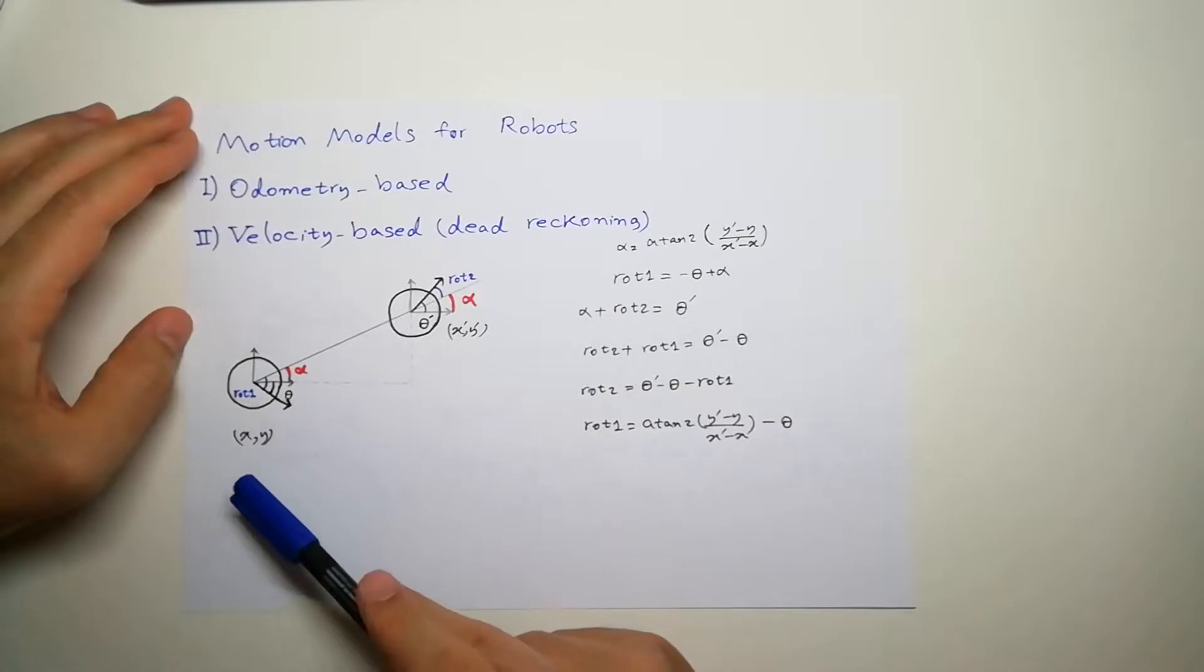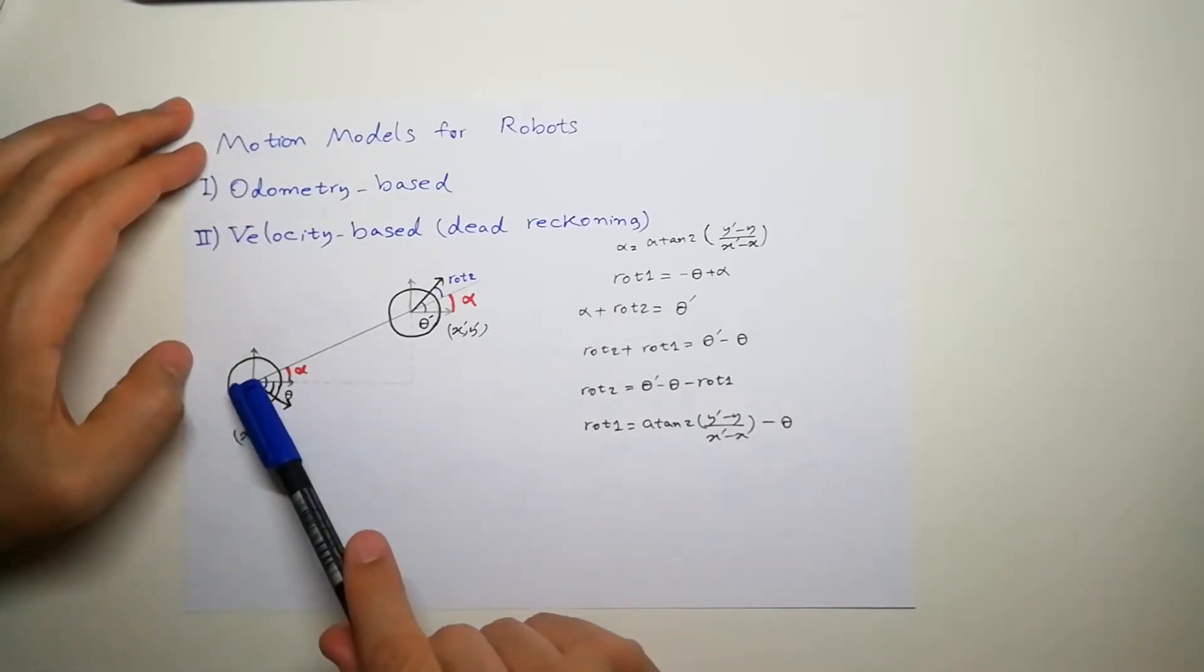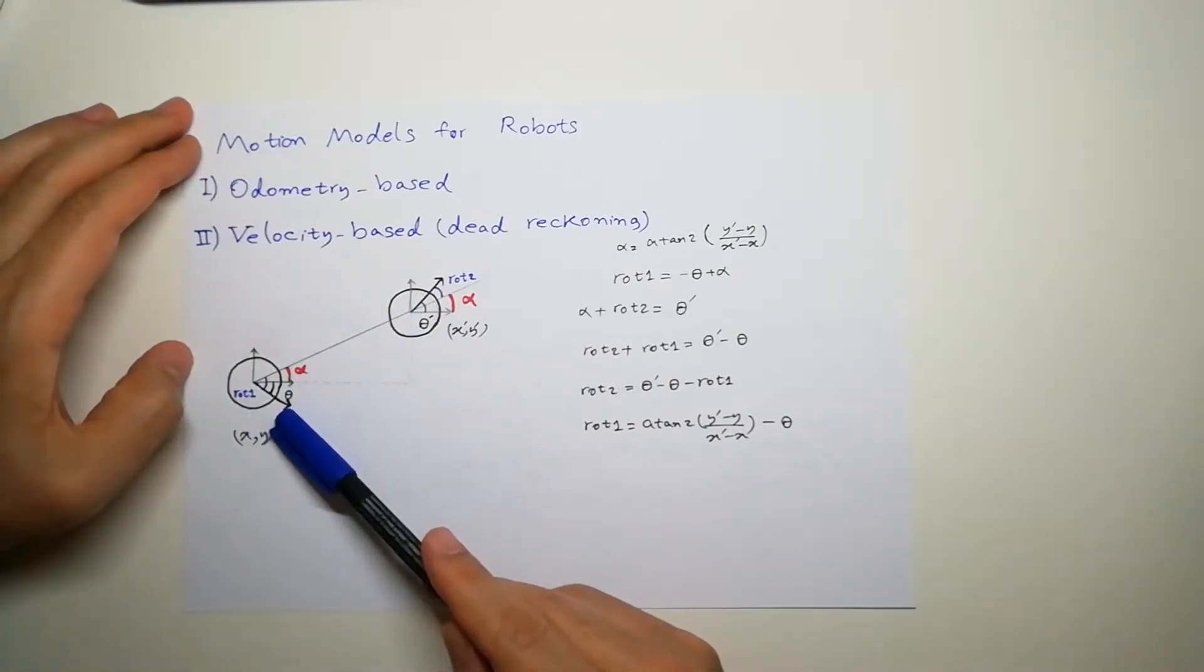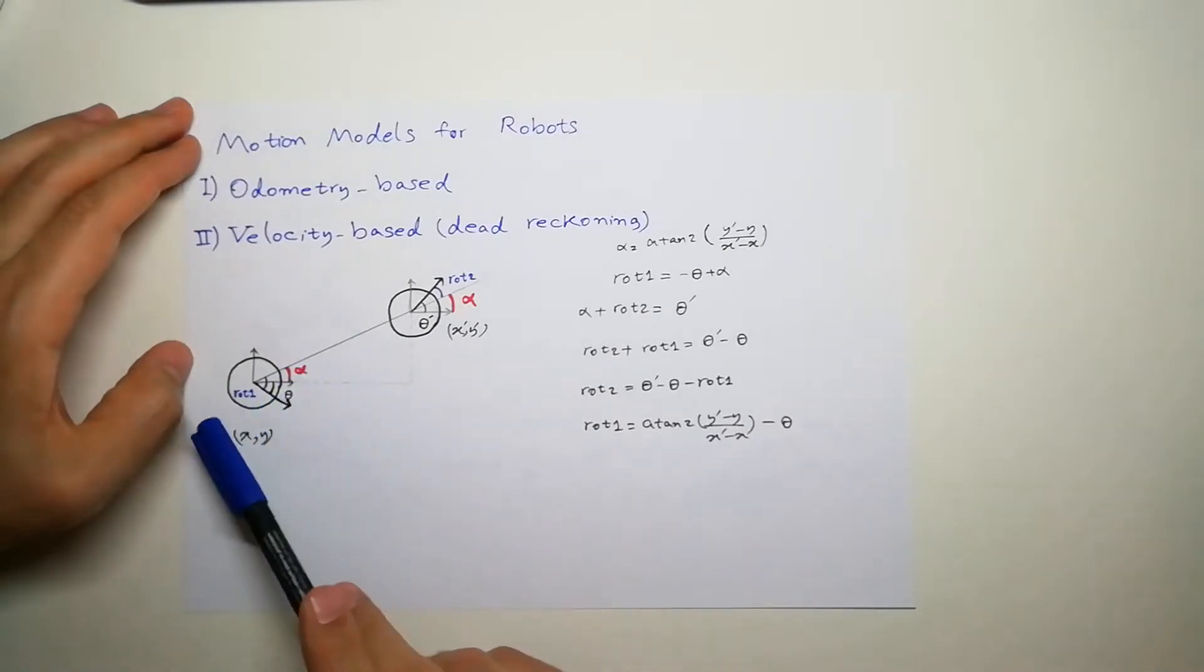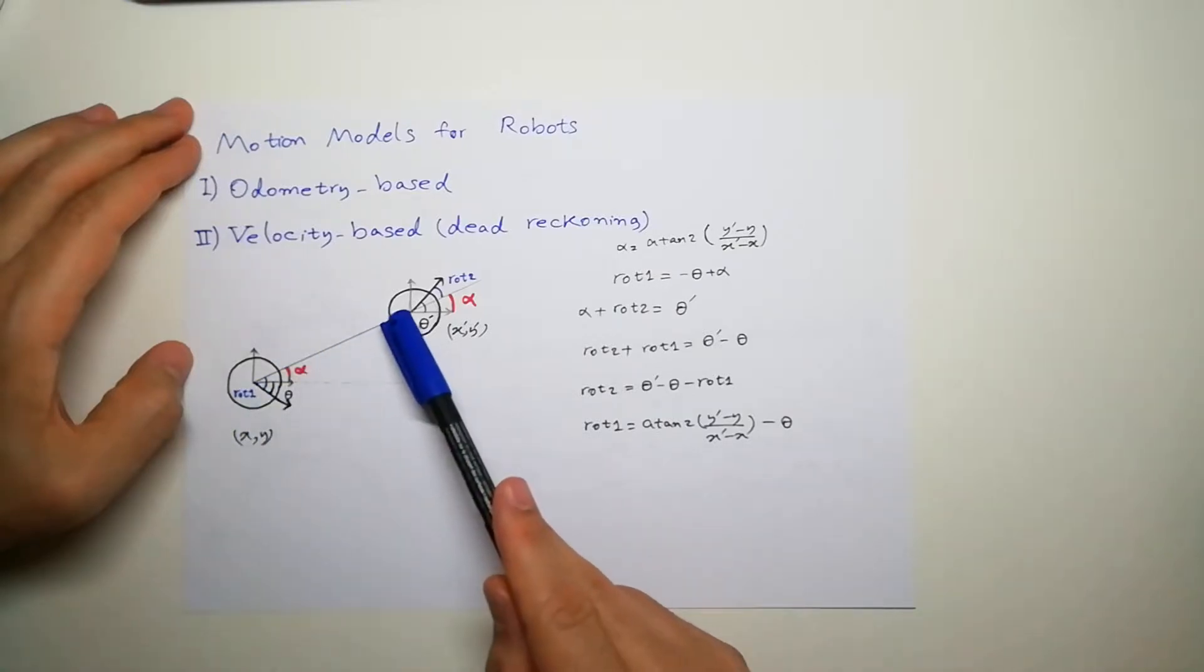We can actually think that for a robot, we can connect the center of a robot with a line, with a straight line, and then say our robot actually has been turned this angle, which I denoted by rotation 1, moved x and y.